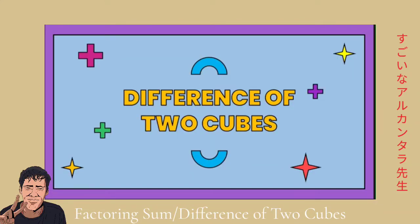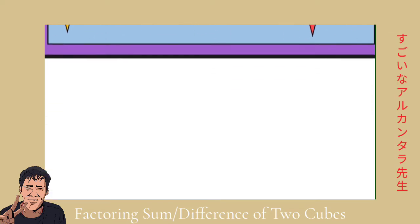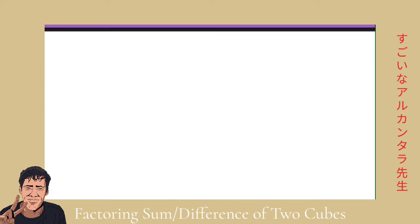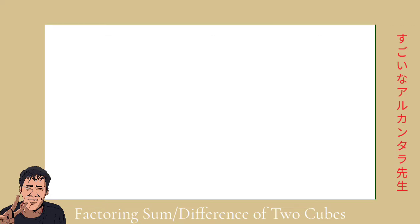Before we fully discuss what difference of two cubes are, it is important for us to know what those cubes mean. Basically, cubes — if you want the geometrical explanation — it came from the concept of cubes and the volume of it, where you get side times side times side. But to be more specific with what we are studying here in algebra, you can have this kind of review to guide you in identifying what numbers will give you a cube or how you get a cube.